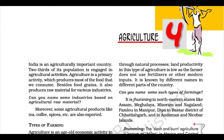Maize is a crop which is used both as food and fodder. It is a Kharif crop which requires temperature between 21 to 27 degrees and grows well in old alluvial soil. In some states like Bihar, maize is grown in the Rabi season also. Use of modern inputs such as HYV seeds, fertilizers, and irrigation have contributed to the increasing production of maize. Major maize-producing states are Karnataka, Uttar Pradesh, Bihar, Andhra Pradesh, Telangana, and Madhya Pradesh.